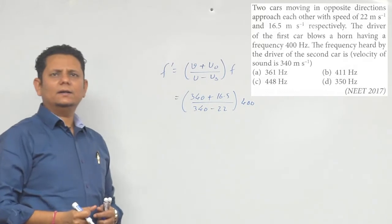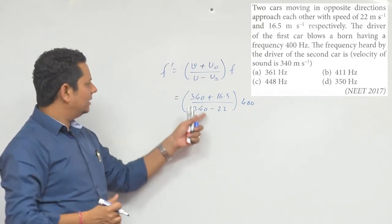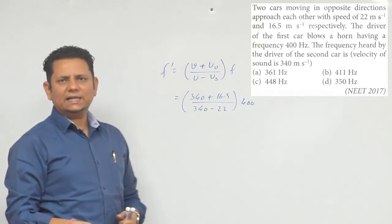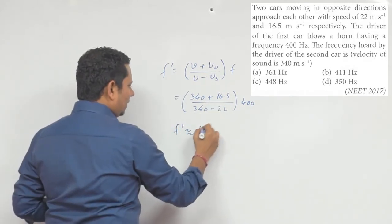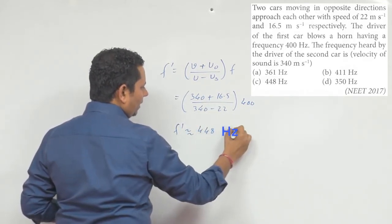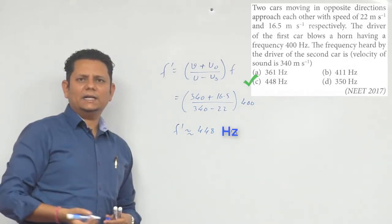Let's verify - f is 400. Based on this, when we calculate, your f dash will be approximately 448 hertz. Your answer will be in this range.